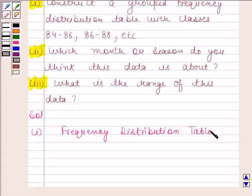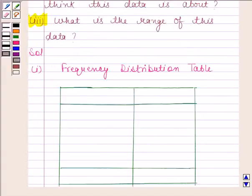Let us make a table now. We have made two columns. One for relative humidity and another for frequency.